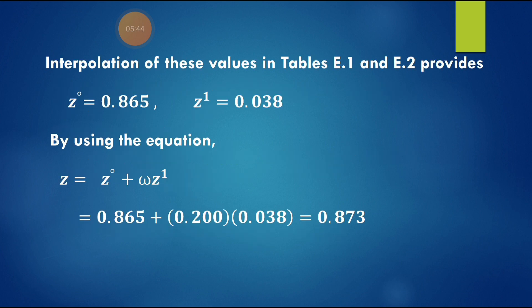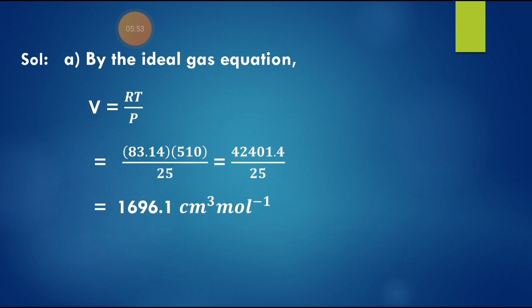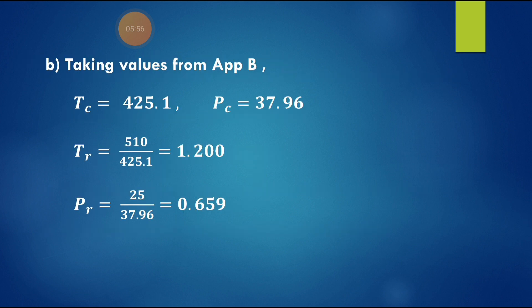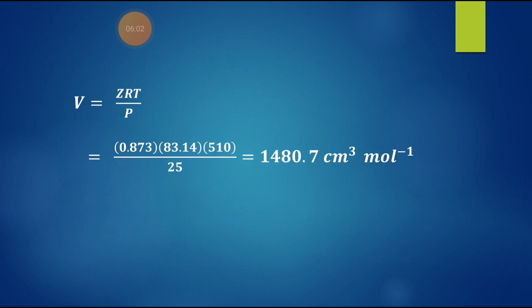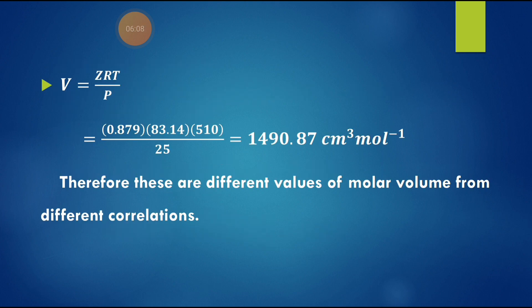We can now compare the molar volume results from all three correlations — the ideal gas equation, the generalized compressibility factor correlation, and the generalized virial coefficient correlation. The values are close to each other and can also be compared with experimentally calculated values. This is how we estimate molar volume using different correlations. Please subscribe, like, and share — thank you!